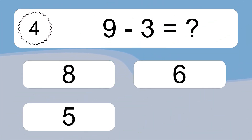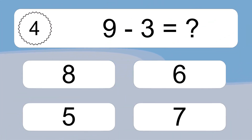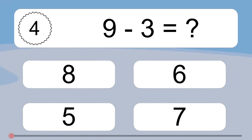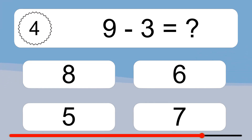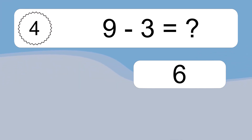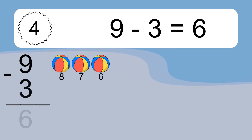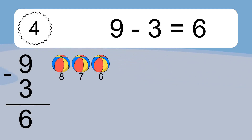9 minus 3 equals what? 9 minus 3 equals 6. Let's count it: 8, 7, 6.